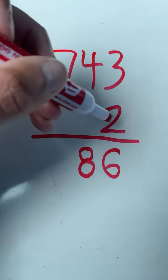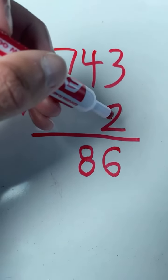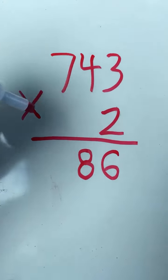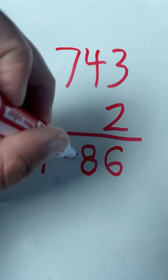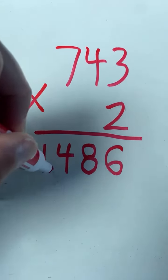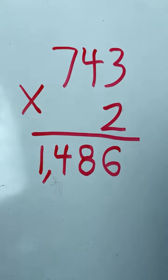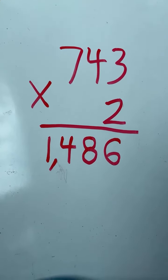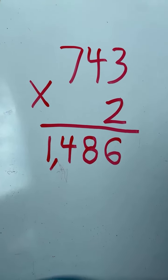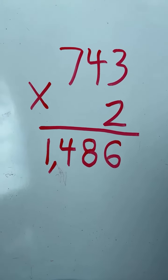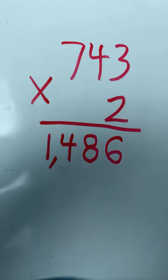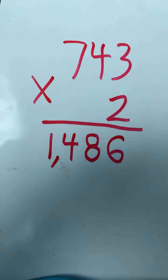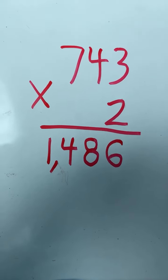7 times 2 equals 14. And we have our final answer: 743 times 2 equals 1486. Moving on to the next example.